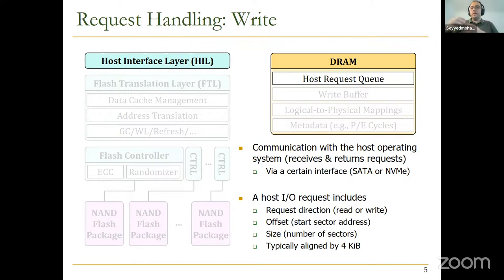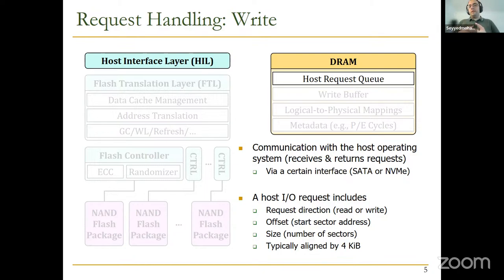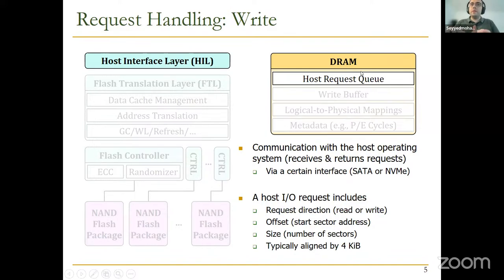A host IO request includes four high-level characteristics. First is request direction — are you going to read or write? Second is offset, which is the start address: when you want to write or read, you provide the offset indicating from which sector you want to start. Third is the size of the request, which can be a number of sectors — you might read one sector, two sectors, or many more. These requests are typically aligned by four kilobytes.